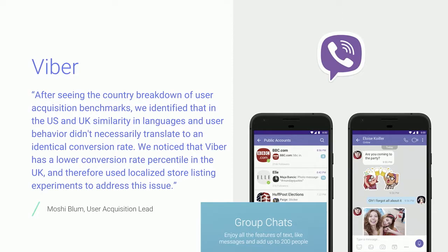And they knew what goals to set themselves to reach for their in-store conversion. Using this report, Viber were able to identify countries that were below the Peer Benchmark. One such example was the UK and the US. As Viber discovered, user behavior was quite different, and they saw that their UK in-store conversion was much lower than the peer set.